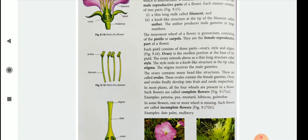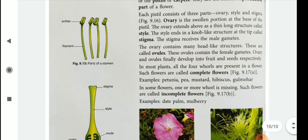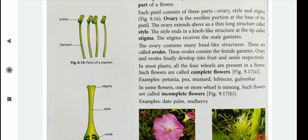So, up to this you should learn. The important terms you should learn include the main function of the flower, which is reproduction, followed by source of food and ornamental value. Read this chapter carefully and properly and memorize all the terms, because these terms are very important for your next class.